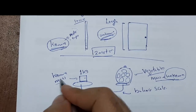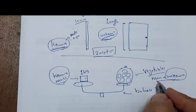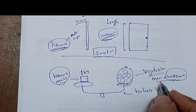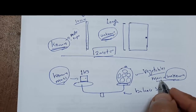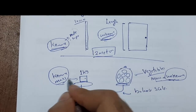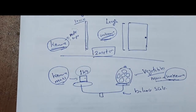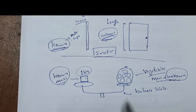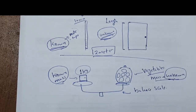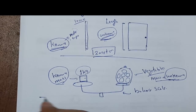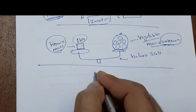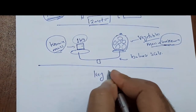You compare the unknown mass with the known mass. For example, the mass was one kilogram, so you find out how many times the unknown includes the known — for example one kilogram or two kilograms and so on. This is measurement.